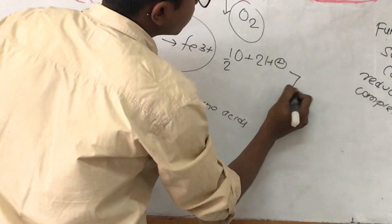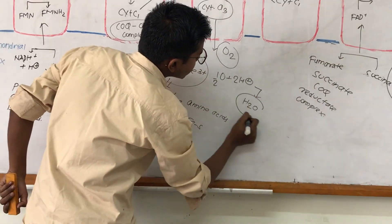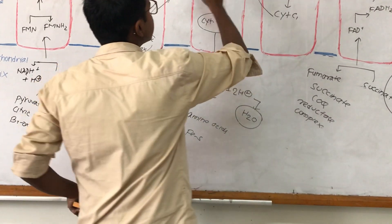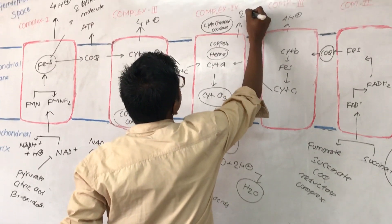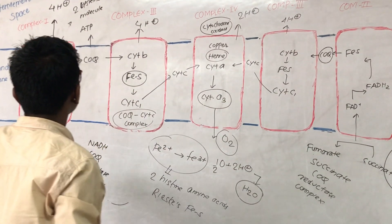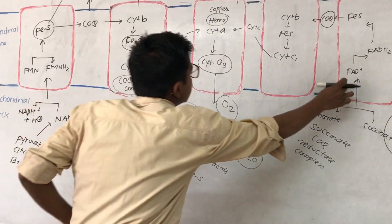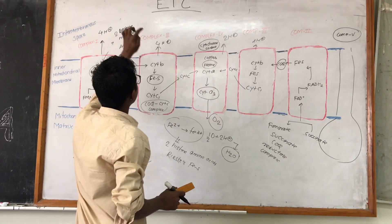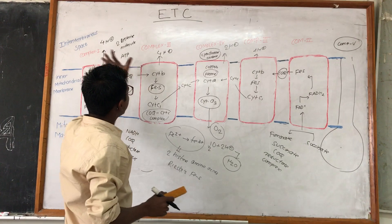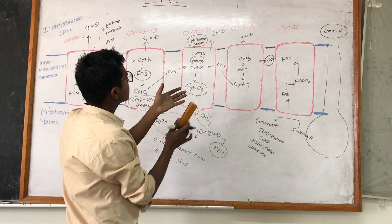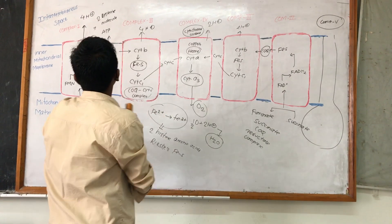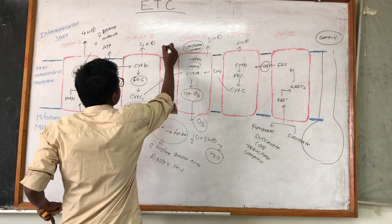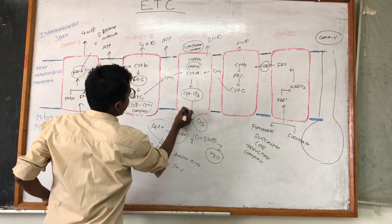After receiving electrons, oxygen is changed into an oxygen anion, which reacts with two protons to form water — known as metabolic water. This process is associated with pumping of 2 hydrogen ions to the outside. In total, 4 protons from complex 1, 4 from complex 3, and 2 from complex 4 give 10 protons pumped into the intermembranous space. These correspond to the three sites of ATP synthesis.